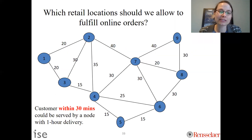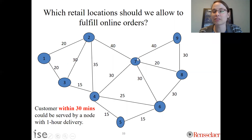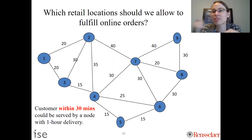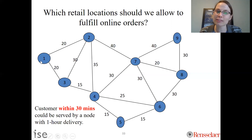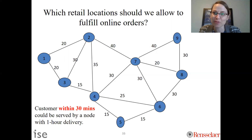We want to determine which stores to designate as ship-from-store locations to provide a one-hour delivery guarantee to all customers. In this schematic, each node represents one of the nine stores. The arc labels show the travel time between store neighborhoods. Since the full hour includes picking time, we need the transportation portion to be 30 minutes or less to reach all neighborhoods. Please pause this video and figure out: what is the minimum number of locations needed?